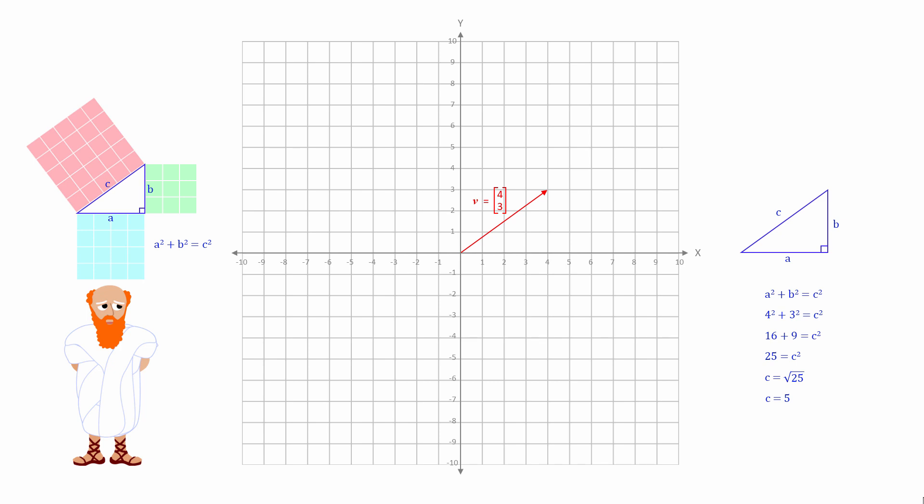We can indicate that we are talking about the magnitude of a vector by using double vertical bars on either side of the vector's name, like this.